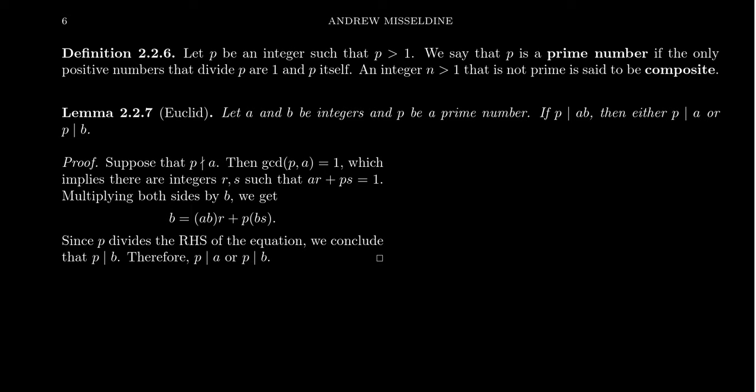This is very important that we have prime numbers in this situation. For example, if you took A to be three and B to be four, the product A times B equals 12. Six divides 12, but six does not divide three nor does six divide four.